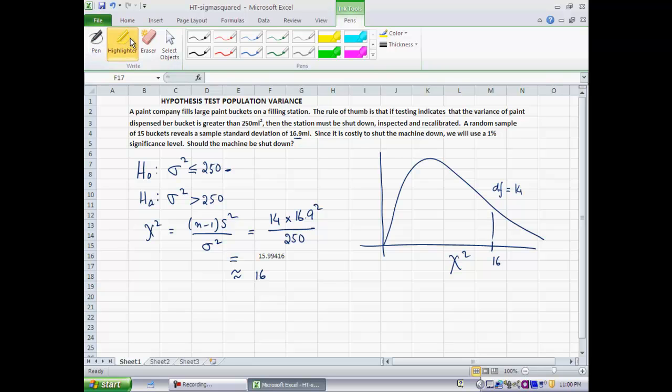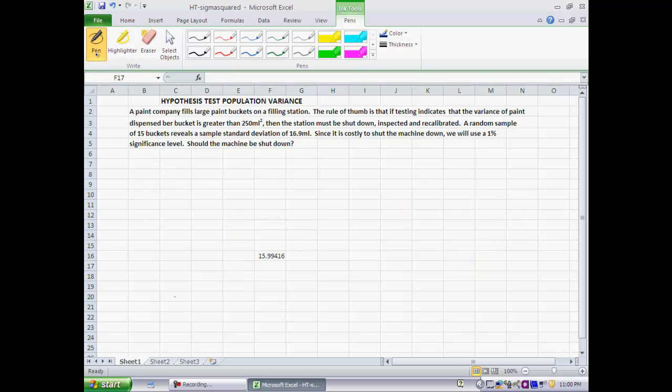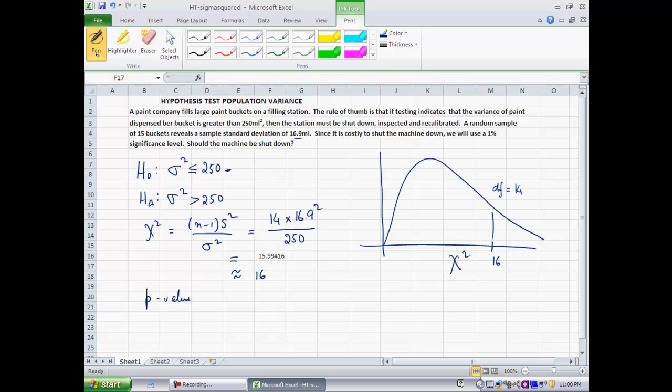So remember that there were two ways of going about the next step. One is the p-value method. How does the p-value method work? We ask ourselves the question: if the null were true as an equality, how likely is it that we would get a sample statistic as extreme as the one we just saw? So how likely is it that we would see a sample standard deviation of at least 16.9 milliliters if the null were true as an equality? So translated into probabilistic terms, I want the area of the right-hand side over here. Why right-hand side? Notice that the alternate hypothesis is a one-sided right-handed hypothesis, σ² > 250. So I want the probability of chi-squared being greater than 16. That is my p-value.